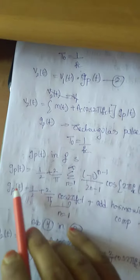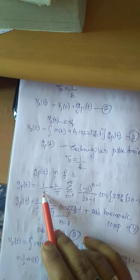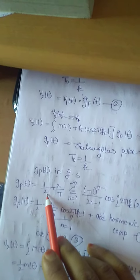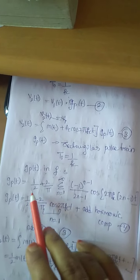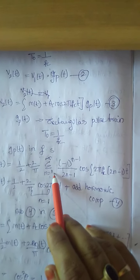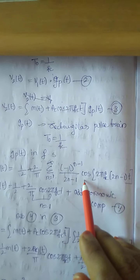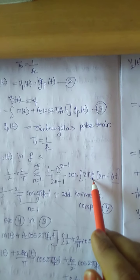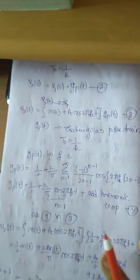Now gp(t) is a rectangular pulse and we need to consider gp(t) in the Fourier transform. Representing gp(t) by its Fourier transform, we have: gp(t) = 1/2 + (2/π)·Σ[n=1 to ∞] [(-1)^(n-1)/(2n-1)]·cos(2π·fc·(2n-1)·t). This is the Fourier series representation; the related formulas are as shown.